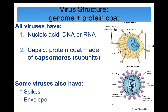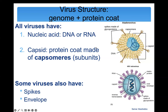A virus is nucleic acid — genetic material — which is either DNA or RNA. DNA viruses have DNA; RNA viruses have RNA. That nucleic acid is wrapped in a protein coat made out of capsomeres, called a capsid. All viruses have DNA or RNA and a capsid. In addition, some viruses may or may not have spikes and envelopes, which we will talk about.